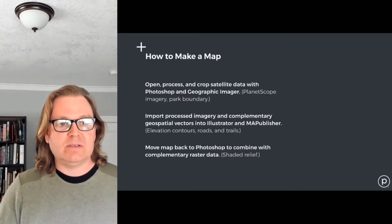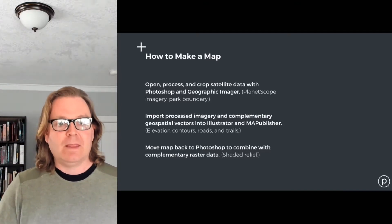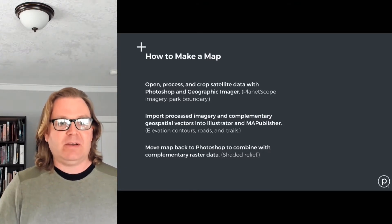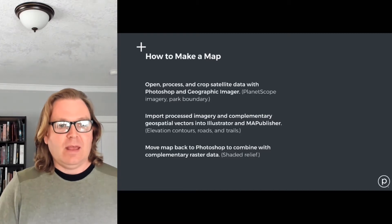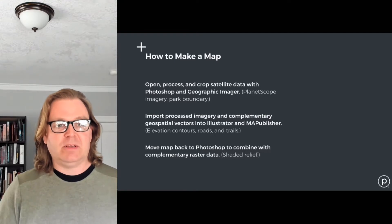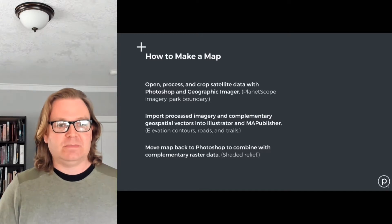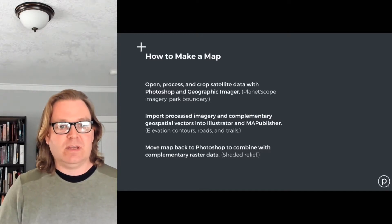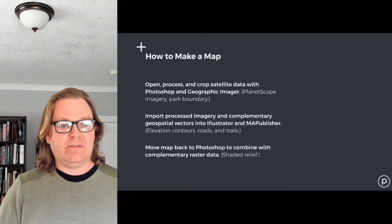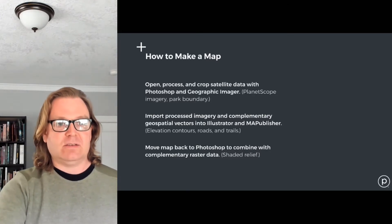The workflow is to open, process, and crop the satellite data in Photoshop and Geographic Imager — this involves PlanetScope imagery and park boundary data. Then export that from Photoshop as a geotiff and import the processed imagery and complementary geospatial vectors into Illustrator and Map Publisher, including elevation contours, roads, trails, and the park boundary again. Then export back from Illustrator into Photoshop to combine with complementary raster data — in this case, a USGS DEM converted to Shaded Relief.